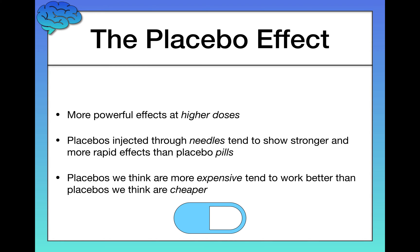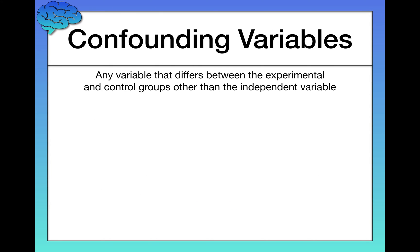Beyond the placebo effect, what else do we need to be aware of when doing experiments? One big limitation is confounding variables. A confounding variable is any variable that differs between the experimental and the control groups other than the independent variable — other than your key manipulation of interest.